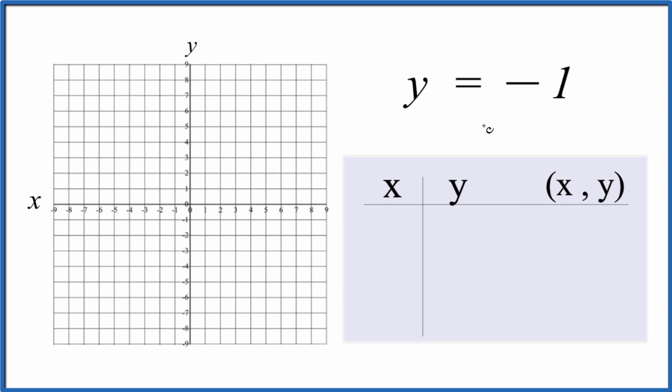So let's graph this linear equation. We have y equals negative 1. So we use a table of values, then we'll talk a little bit about slope-intercept form and how we can use that.